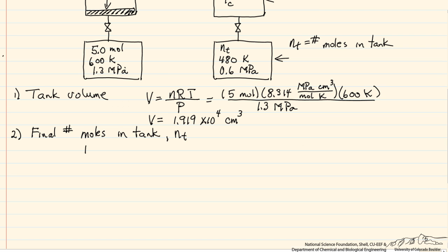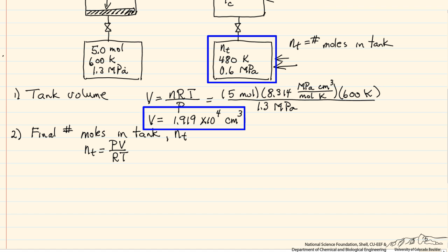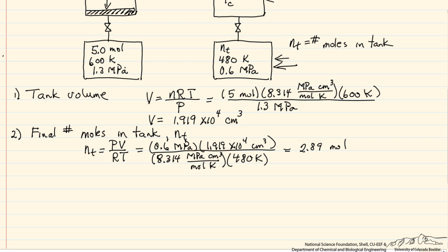This allows us to determine the final number of moles in the tank. Using the ideal gas law again with the final temperature and pressure, we find 2.89 moles remain in the tank. Since we started with 5 moles, the number of moles in the cylinder is 5 minus 2.89, giving us 2.11 moles in the piston-cylinder at the end.